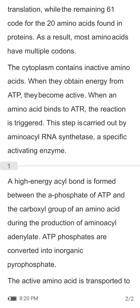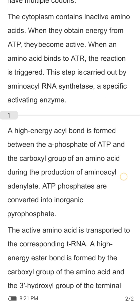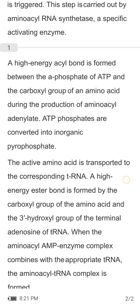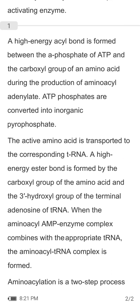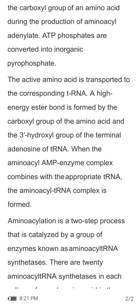Amino acids in the cytoplasm are initially inactive. When they obtain energy from ATP, they become active. When an amino acid binds to tRNA, the reaction is triggered. This step is carried out by aminoacyl-tRNA synthetase, a specific activating enzyme. A high-energy acyl bond is formed between the phosphate of ATP and the carboxyl group of the amino acid during the production of aminoacyl-adenylate. ATP phosphates are converted to inorganic pyrophosphate.